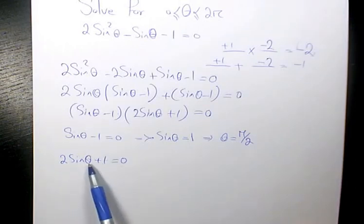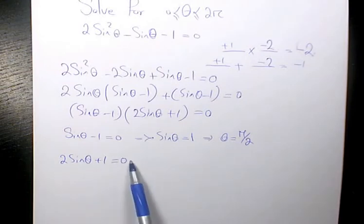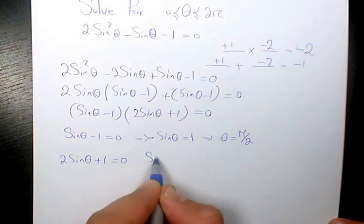Here I have 2 sine theta plus 1 equals 0. If I want to isolate it for sine theta, I need to bring this 1 to this side, which becomes negative 1. Negative 1 over 2 is going to be negative 1/2.